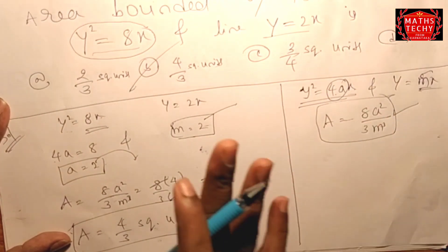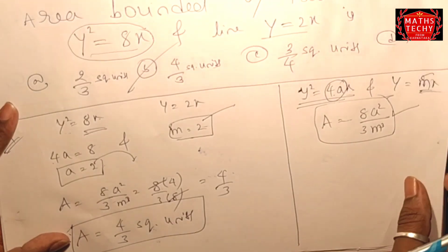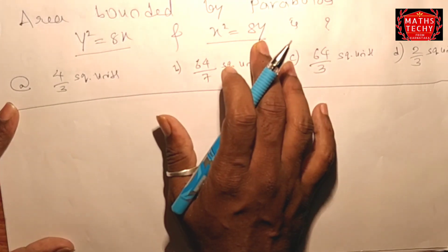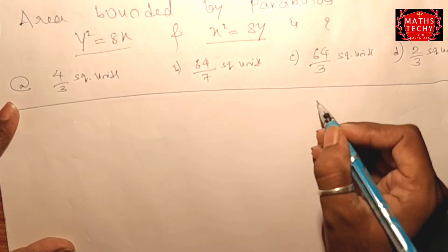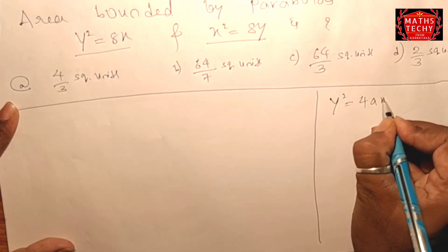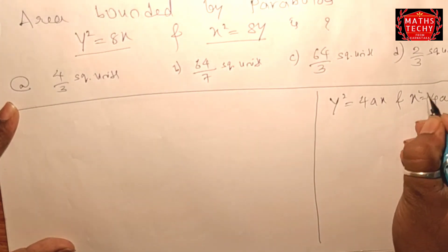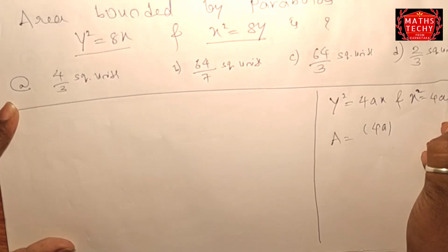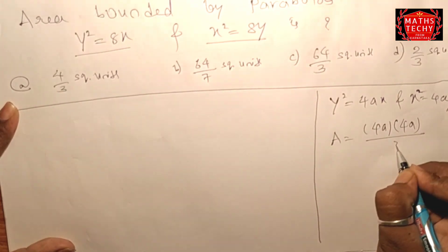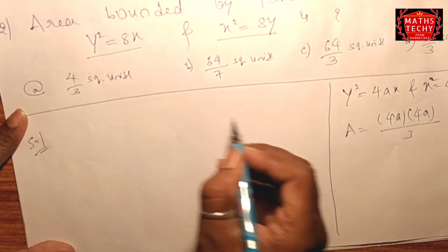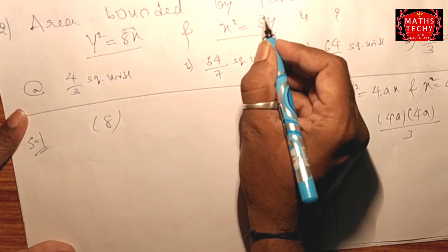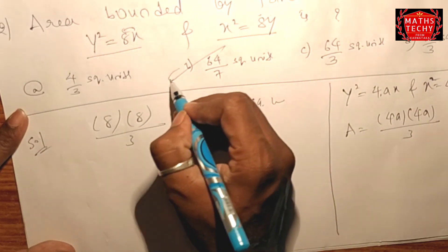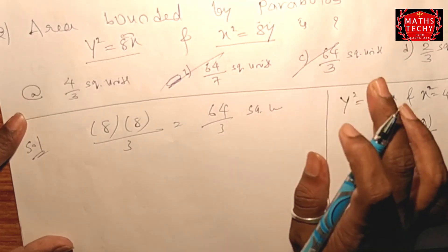So the answer is 4/3 square units — that is the shortcut trick, solved within one minute. Now the next problem: we have two parabolas and we need to find the area bounded by them. For y² = 4x and x² = 4y, using the short method: the coefficient is 8, so 8² = 64 divided by 3 square units is the answer.